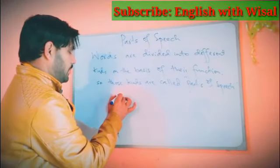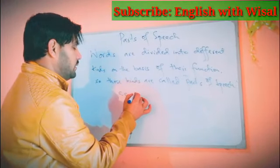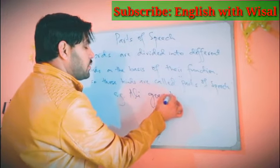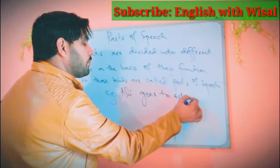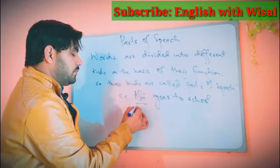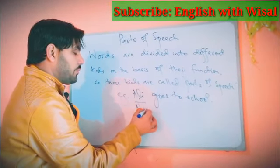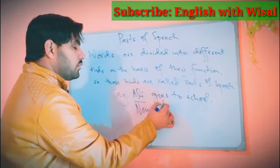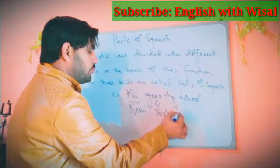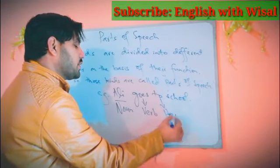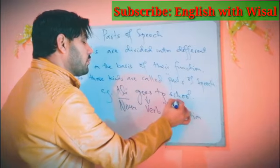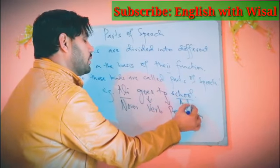Let's see an example. For example, 'Ali goes to school.' Ali is used here as a noun. Goes is a verb. To is a preposition. School is a noun.